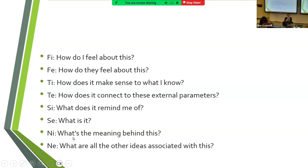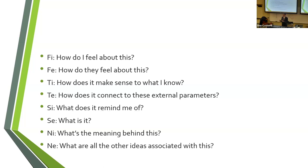One big difference is that extroverted intuitive types are very quick thinking — they can explore multiple possibilities simultaneously. It's been found that a number of the best chess players in the world have extroverted intuition high in their stack, because being able to explore multiple possibilities simultaneously is a good strength in chess. Neuroimaging studies have also found that more of the brain is active all at once in extroverted intuitive types rather than other types, and there isn't a great general difference in brain activity between the other types.